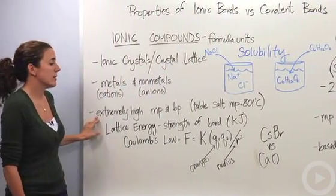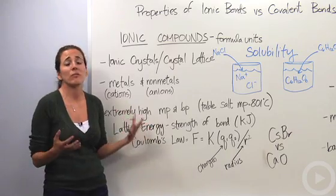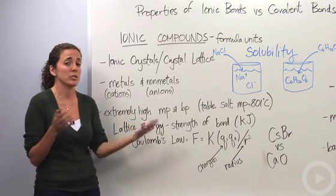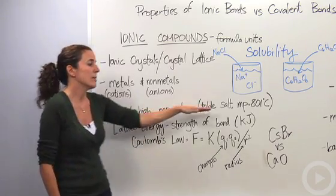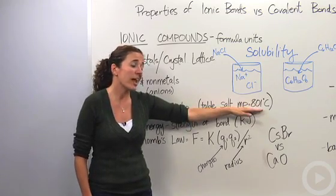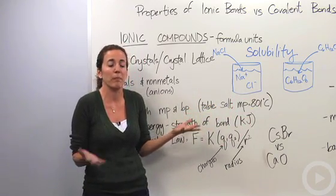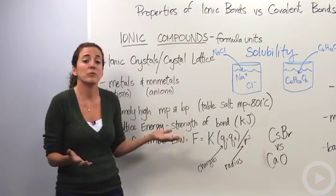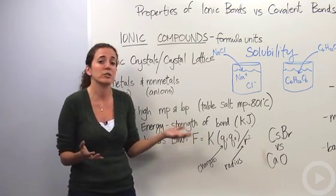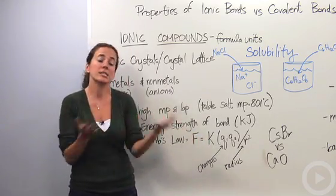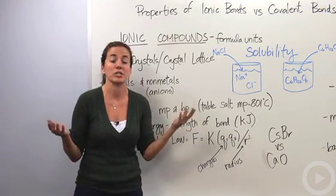Their melting points and boiling points are really high because basically all they are are two ions held together. For example, table salt has a melting point of 801 degrees Celsius, ridiculously high. You've never actually melted salt before. Too much energy is required to break apart those ions to make it melt or to make it a gaseous compound.